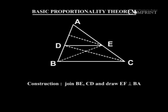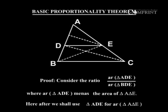Construction: Join BE and CD, and draw EF perpendicular to BA. Proof: Consider the ratio.